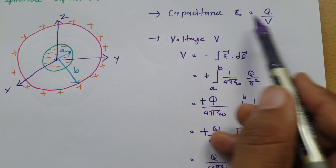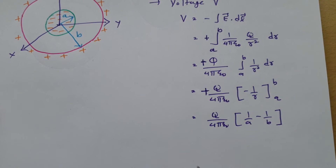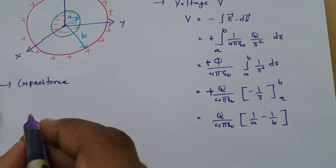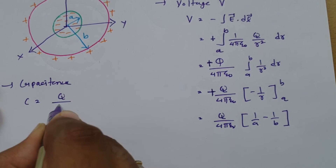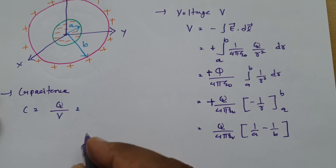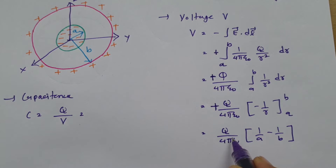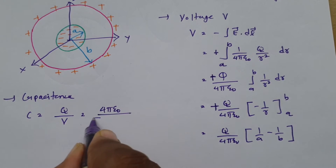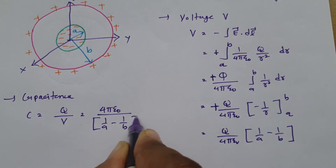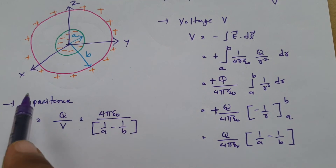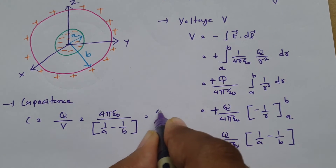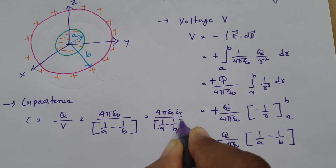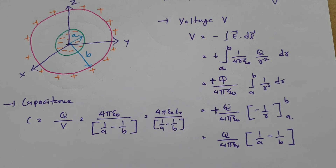We know the capacitance formula is C = Q/V. So substituting, Q cancels and the denominator goes to the numerator, giving C = 4πε₀ / (1/a − 1/b) for inner and outer spheres. If there is a dielectric medium, then C = 4πε₀εᵣ / (1/a − 1/b).